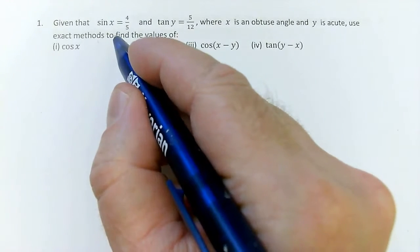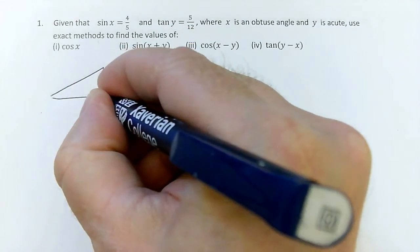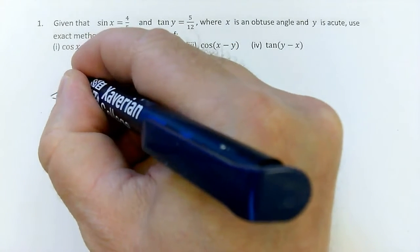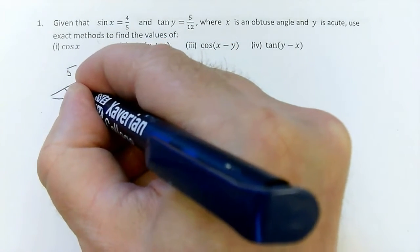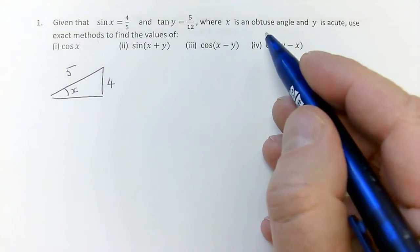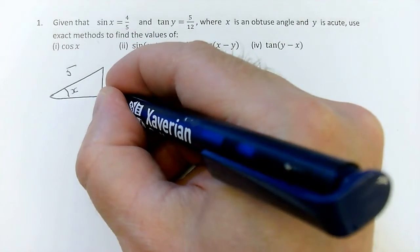So let's do a right angle triangle for sine x. For sine of x to be 4 fifths, I could have a 4 there and a 5 there if this was x. Now of course, x is supposed to be an obtuse angle, but I'm using the corresponding acute angle because I'm going to ignore any minus signs until the end.